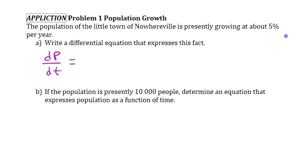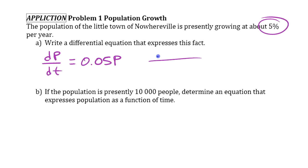We know what that constant is — it's 5%. The rate of change is 5% of the population. That's the differential equation that expresses that fact.